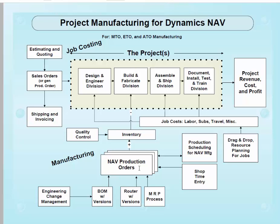The purpose is really project costing, but the project often includes a component of manufacturing. The concept is being able to combine NAV manufacturing production orders — putting those items into finished goods inventory — and then consuming those on a job. The build and fabrication division is primarily controlled by NAV manufacturing with its bill of materials, routers, engineering change management, MRP processes, and production scheduling.